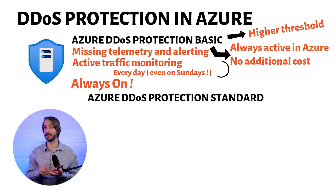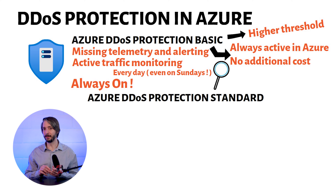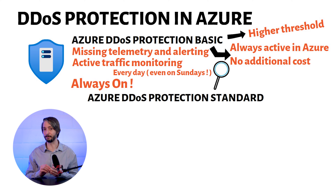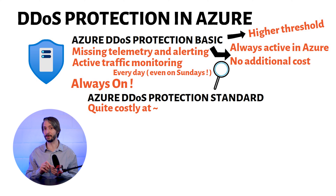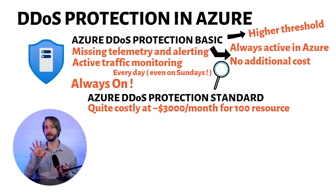DDoS Protection Basic also includes automatic attack mitigation — once an attack is detected, it is mitigated. Moving on to the more advanced DDoS Protection Standard in Azure: this service is quite costly, starting at roughly $3,000 a month, which includes protection for 100 resources.